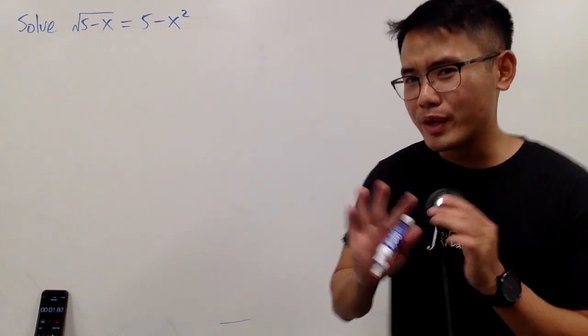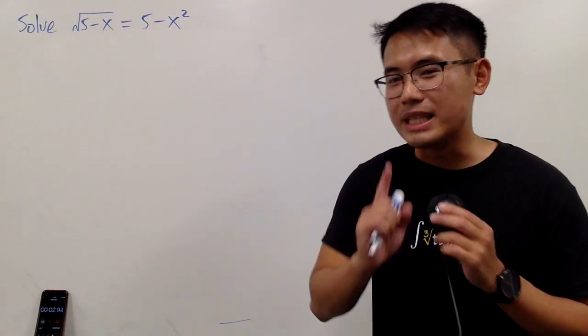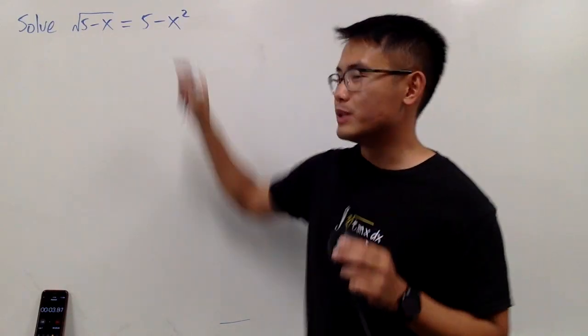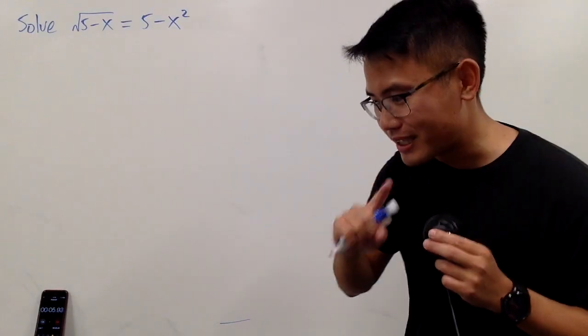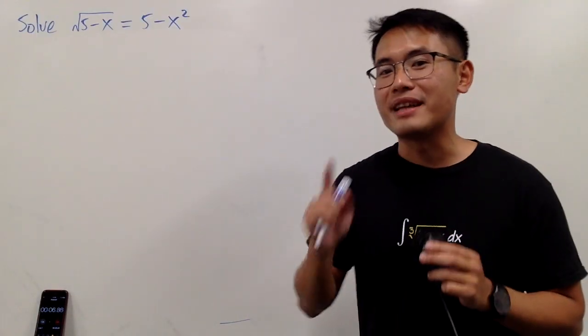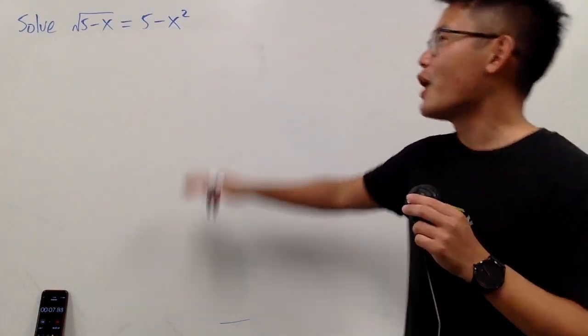We're going to solve this equation, but we're not going to square both sides, because if you do that, on the right hand side, it's that x to the fourth power term. That's bad, that's dangerous — in fact, that's a trap.